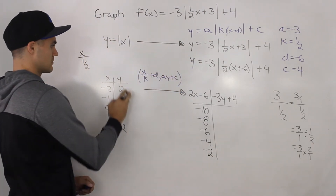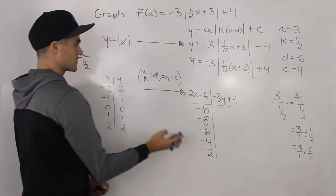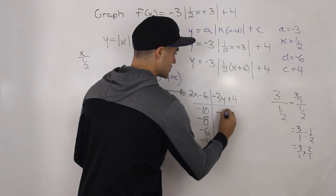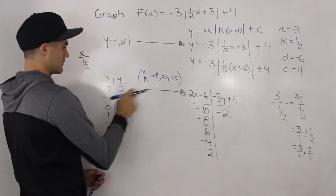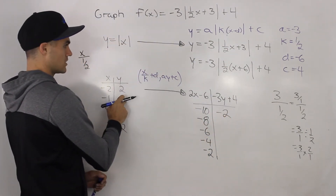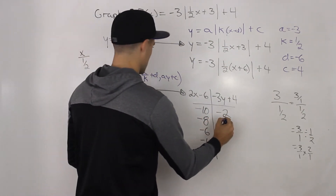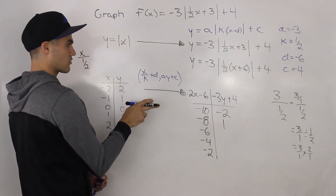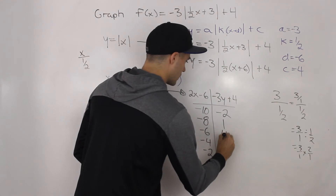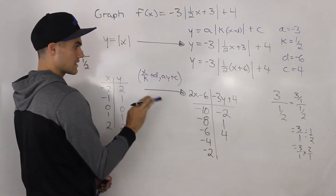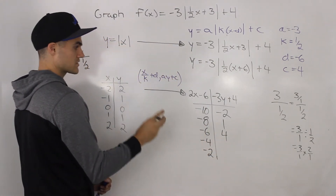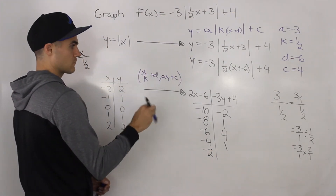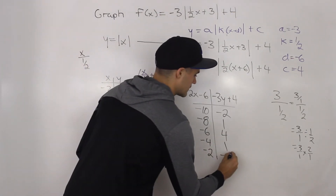Now applying the y mapping (negative three y plus four) to each parent y value: negative three times two plus four gives negative two; negative three times one plus four gives positive one; zero times negative three plus four gives positive four; one times negative three plus four gives positive one; and two times negative three plus four gives negative two.